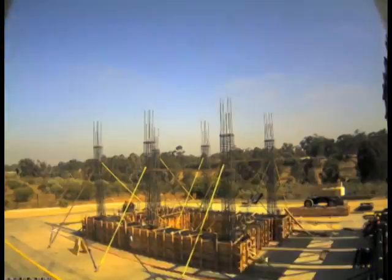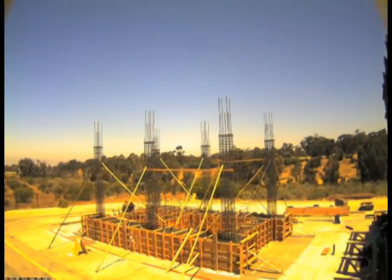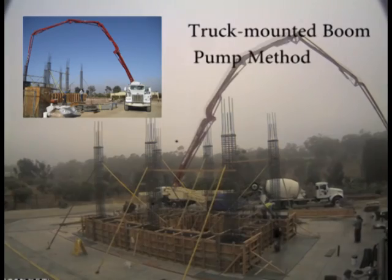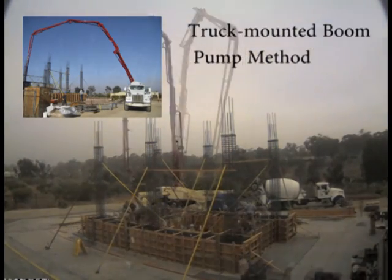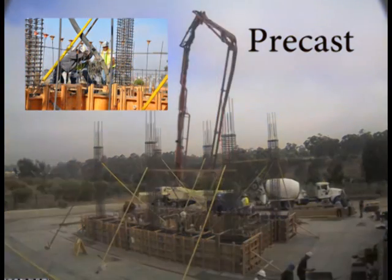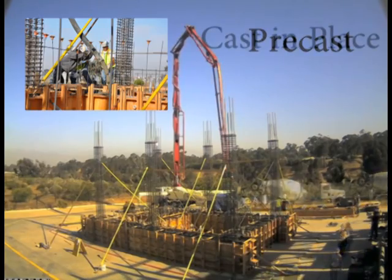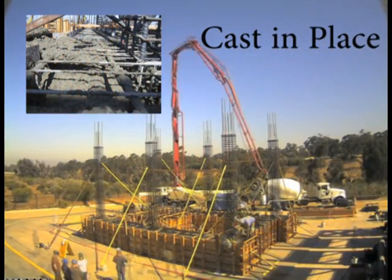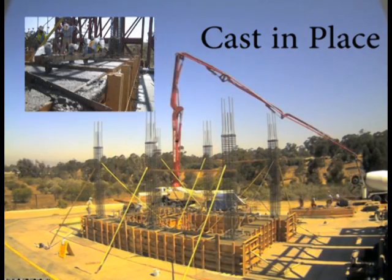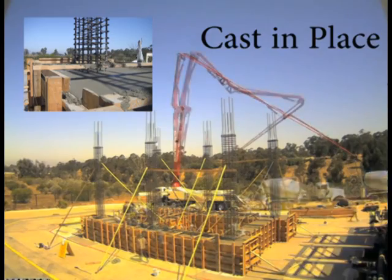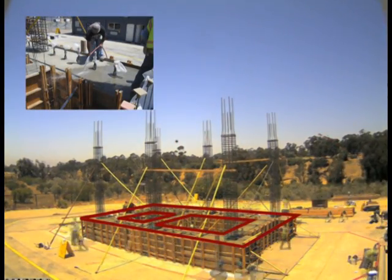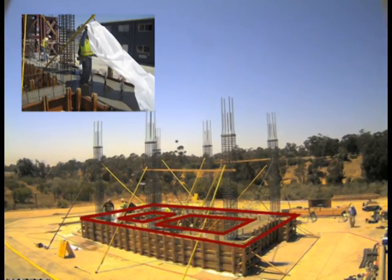Once the rebar cages and formwork are completed, the foundation concrete is poured. In this project, the concrete was poured using a truck-mounted boom-pump method. Concrete can be used in two forms: pre-cast and cast-in-place. Pre-cast concrete products are built off-site and then transported to the construction site, while cast-in-place concrete products are built at the spot where they are supposed to be located. In this project, the cast-in-place method is used. Finally, the concrete is thoroughly covered with a waterproof layer in order to control and preserve moisture content during the curing process.